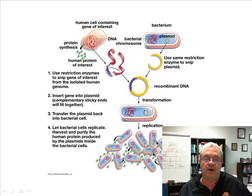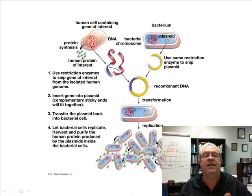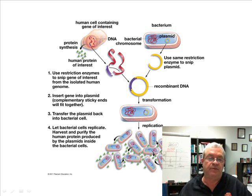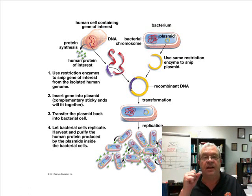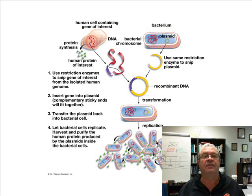Those bacteria cells don't know what else to do with the HGH gene except protein synthesis — they transcribe it, translate it, and produce that needed human protein. Down here the green triangles show that the bacteria have been tricked into producing human HGH. The pharmaceutical company then purifies the human protein, getting rid of all the bacteria cells, packages it, and sells it. Study that diagram and get the idea — there's also a pencast that goes through it as well.